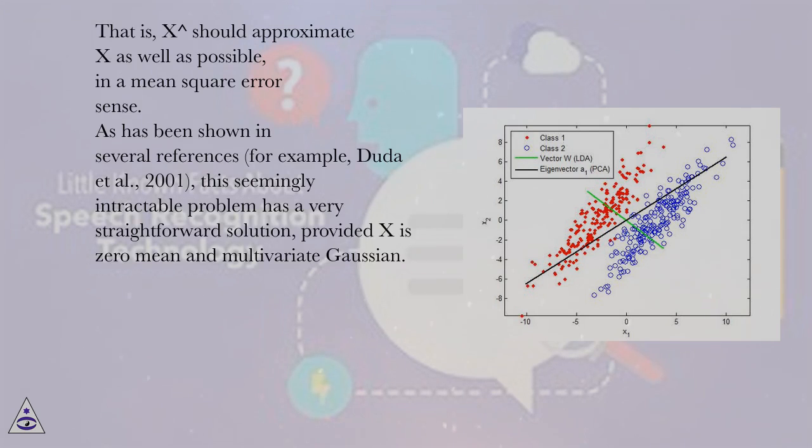That is, X̂ should approximate X as well as possible in a mean square error sense. As has been shown in several references, for example Duda et al. 2001, this seemingly intractable problem has a very straightforward solution, provided X is zero mean and multivariate Gaussian.